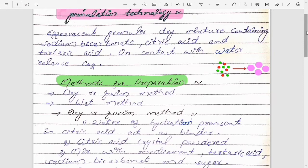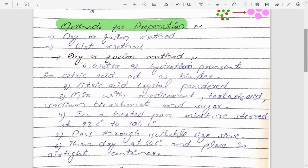Methods for the preparation of effervescent granules: we have two methods. One is dry or fusion method, then second one is wet method. As the name indicates dry, here no need to add any external granulating agent. Dry or fusion method is done for those materials which are moisture sensitive.